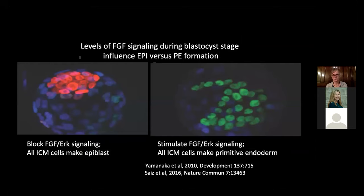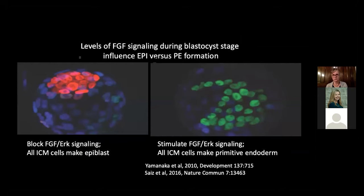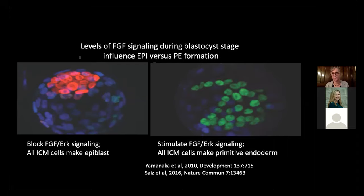Looking at GATA6 for primitive endoderm and NANOG as a pluripotency marker, things are much more complex. This is not a simple segregation — it ends up with NANOG inside the inner cell mass and GATA6 on the outside, but it's certainly not straightforward. What we do know is that FGF signaling is key to that separation. If you block ERK signaling in the early blastocyst, every cell becomes epiblast — NANOG in all cells. If you activate ERK signaling, every cell becomes primitive endoderm. Individual cells are reading out local FGF signals.